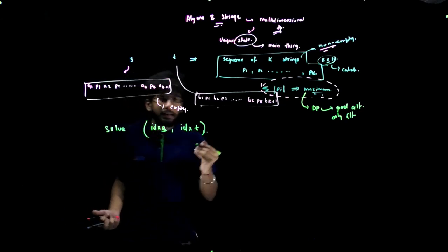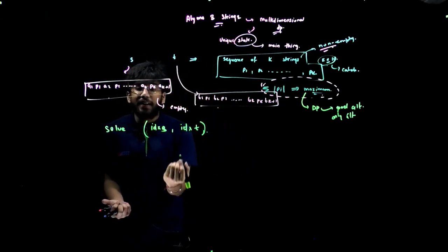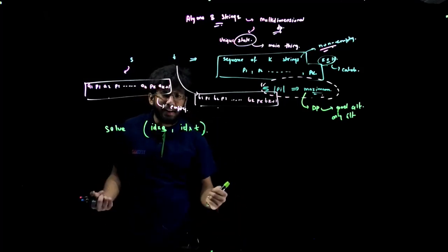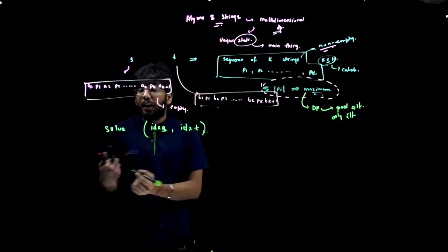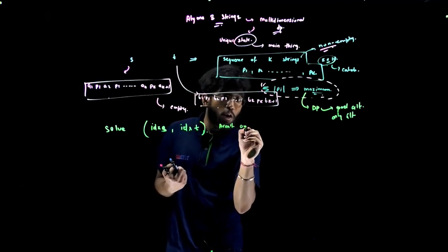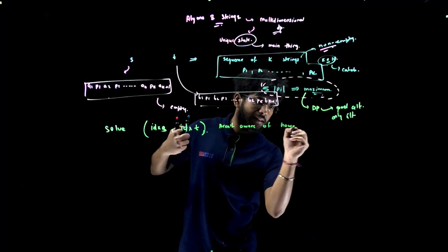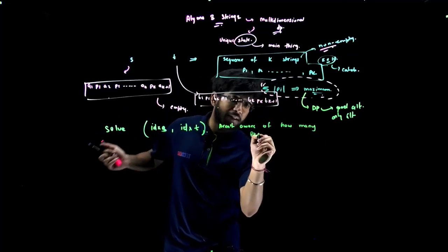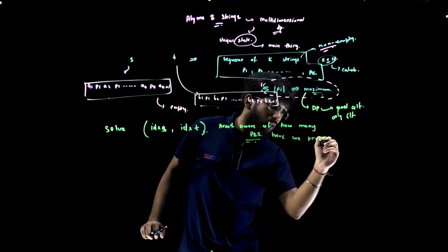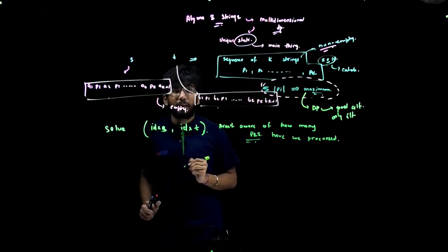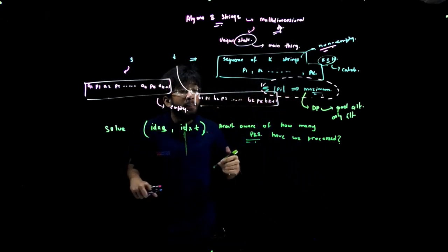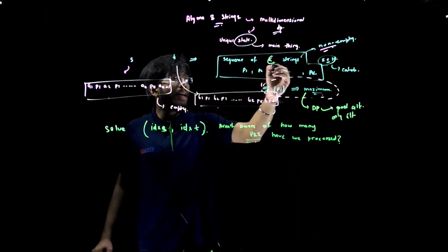According to me, this cannot be enough to solve this DP problem because this does not define a unique state. If we are on some idx_s-th position in the string s and on some idx_t-th position in the string t, then we aren't aware of how many pk's or pk strings have we processed. This k is in exact terms.